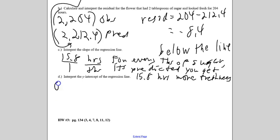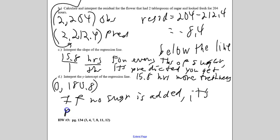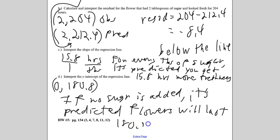Now the Y intercept what is it? Well it's 0, 180.8. So what does that mean? If no sugar is added it's predicted flowers will last 180.8 hours.